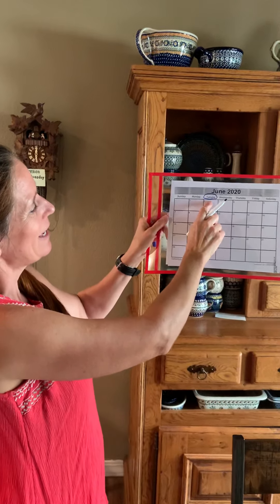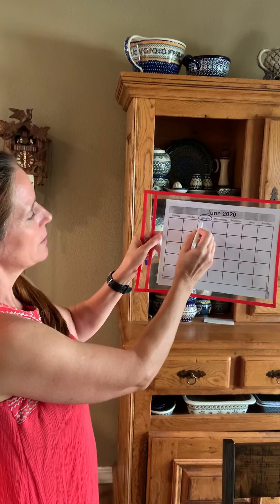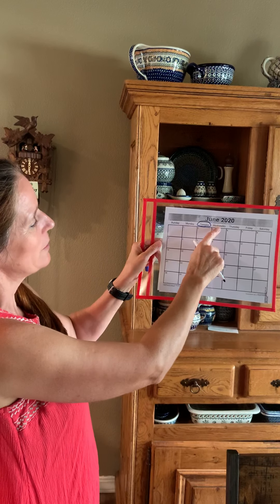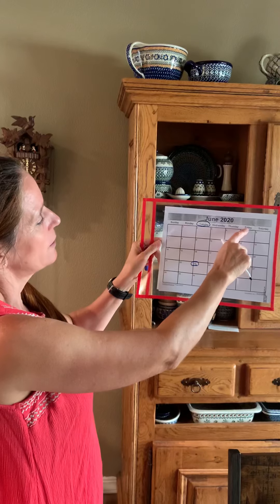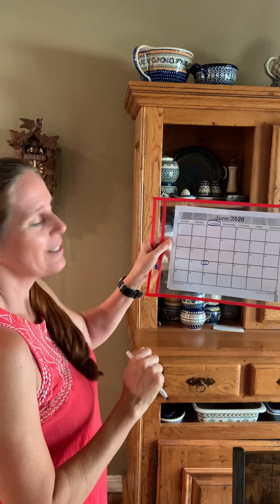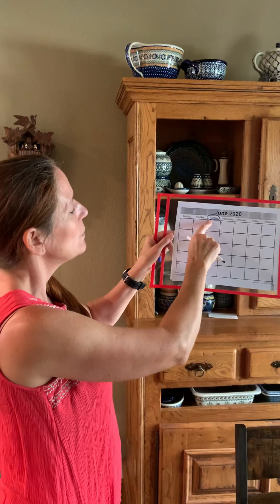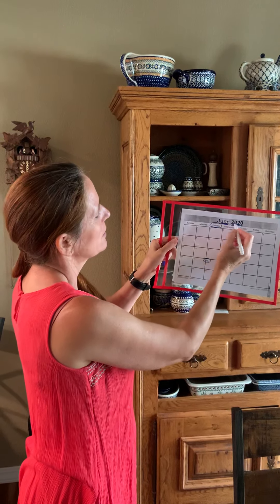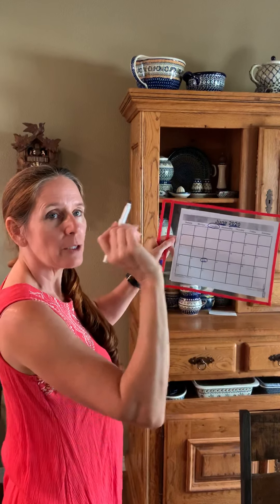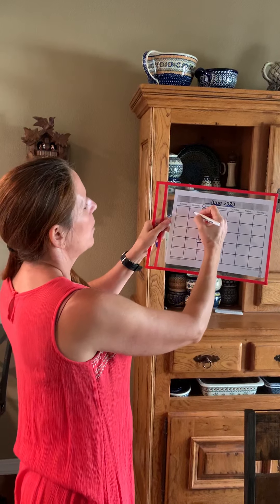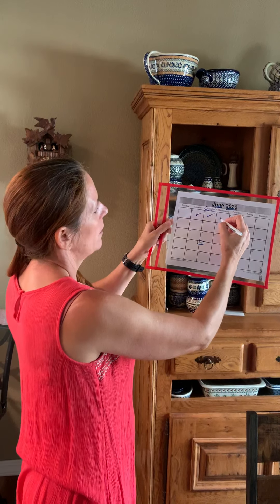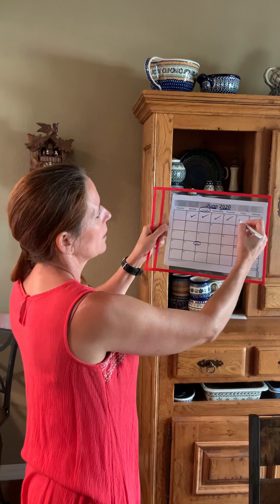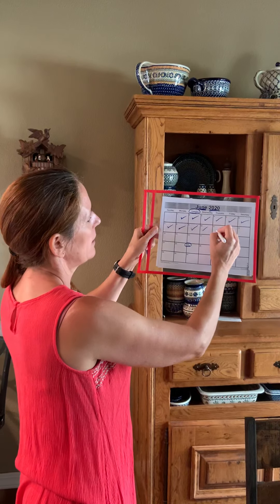We're going to go to our calendar. Today is Tuesday. I'm back to using a mark for today. Tuesday, June 23rd. So there's Sunday, Monday, Tuesday, Wednesday, Thursday, Friday, and Saturday. Today is Tuesday, June 23rd, 2020.